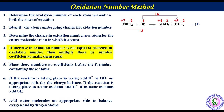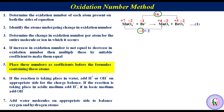Step number 4: If increase in oxidation number is not equal to decrease in oxidation number, multiply by suitable coefficients to make them equal. Here, the increase is +6 and the decrease is −3, so we multiply 3 by 2 to make them equal. Step number 5: Place these numbers as coefficients before the formulas. We put coefficient 2 before MnO4⁻ and MnO2. The equation becomes: 2MnO4⁻ + Br⁻ → 2MnO2 + BrO3⁻ (equation 2).